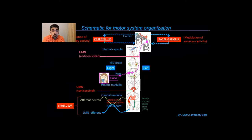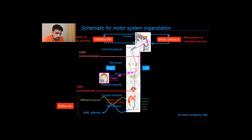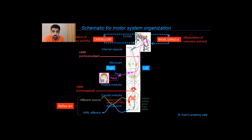Before we describe the cerebellum, let's do a quick recap of the motor system organization using a schematic covered in an earlier video. You can see horizontal slices taken at various levels of the central nervous system — through the spinal cord, lower medulla, upper medulla, pons, midbrain, the level of the thalamus and internal capsule, and finally a coronal slice through the cerebral cortex.